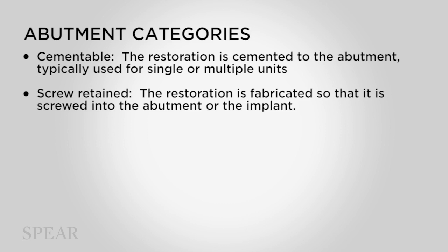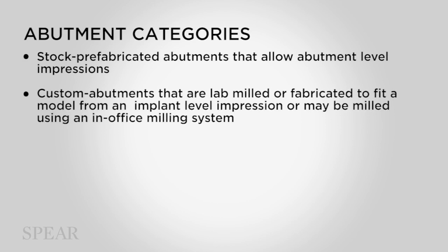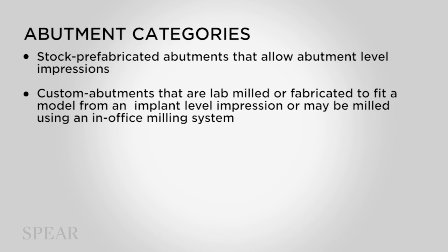Screw-retained abutments are also used in hybrid restorations or in bar-retained overdentures. Two other categories of abutments are stock abutments and custom abutments. Stock abutments are prefabricated abutments that screw into the implant and allow what's called an abutment-level impression, meaning the abutment goes into the implant permanently at the time the restorative dentist places it. Custom abutments are either milled or waxed and cast, fabricated specifically to a given patient, fitting a model from the mouth just as you would a conventional crown impression or from a scanned impression if using in-office milling or scanning.